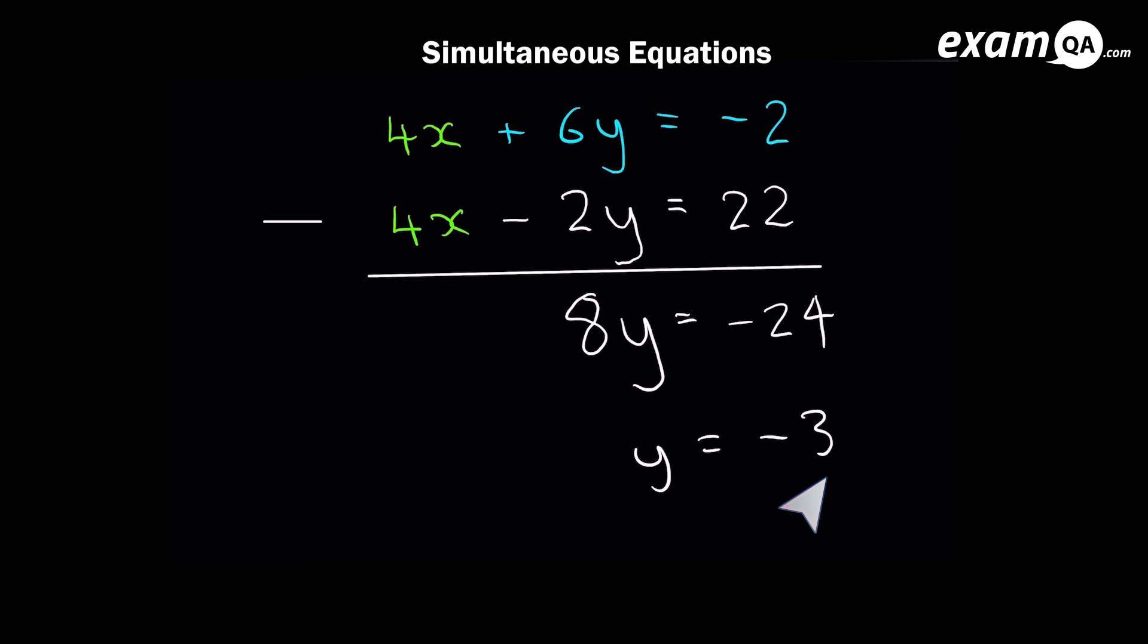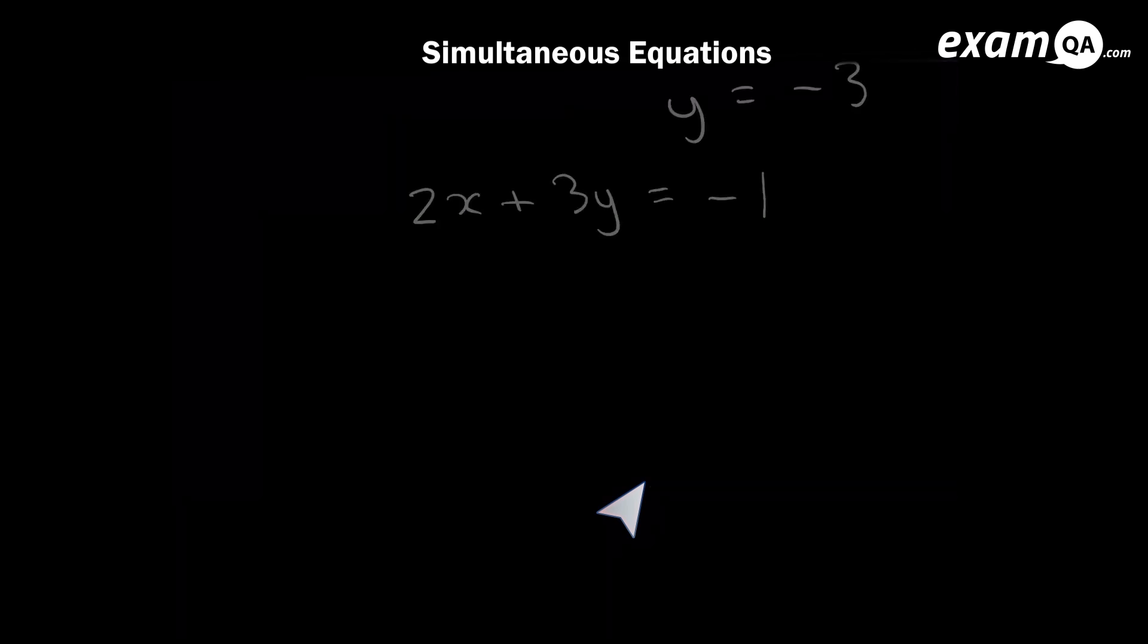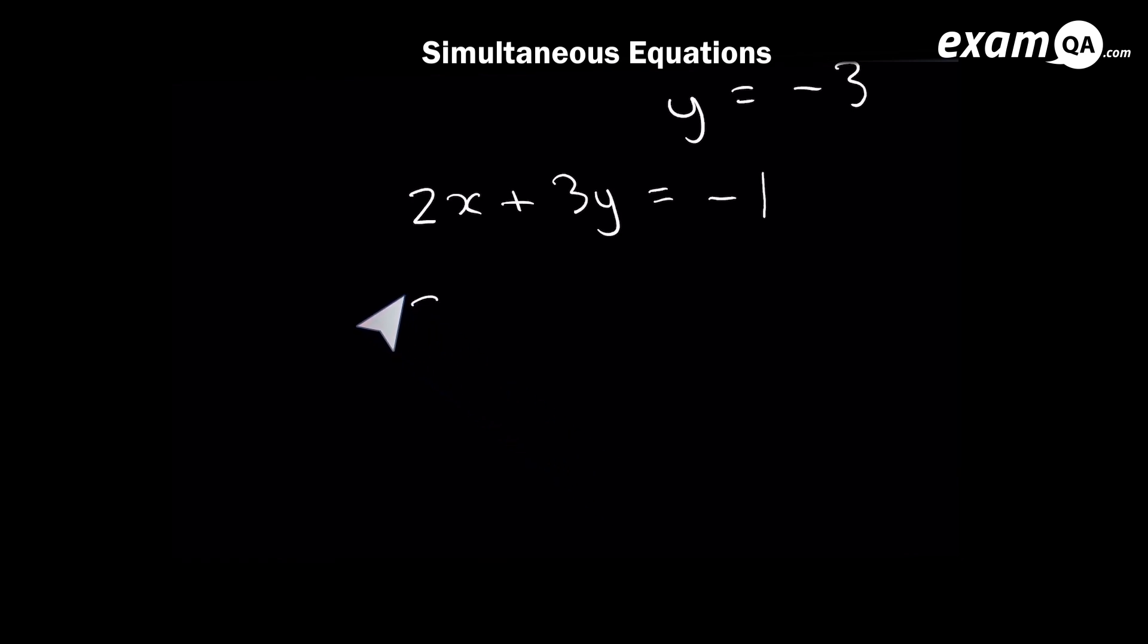And now our last step is to get the x. And remember, we're just going to put this y value in to one of our first two equations. And it could be either of the two. So 2x can stay as 2x. But here we've got plus 3y. And we know y to be minus 3. So 3y means 3 times y. And we're going to do 3 times minus 3, which is minus 9. Now a bit of algebra. Add 9 to both sides. And we have x equals 4.